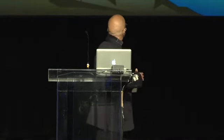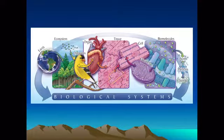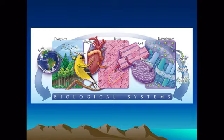For biological systems, we go from the earth, ecosystem, organism, down to the tissues, cells, organelles, biomolecules, and eventually to the atoms, the molecules, the nuclei, the particles, and eventually we believe the strings, super strings.